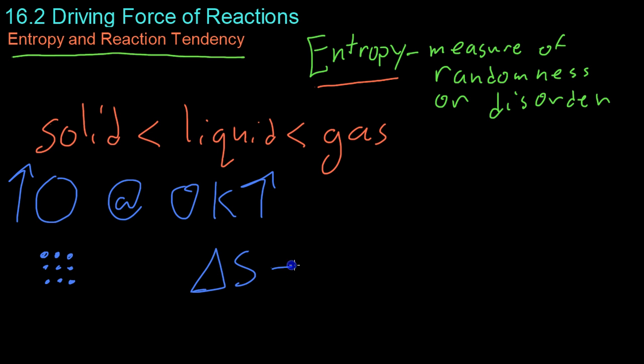And it's called delta S because it's a change in entropy derived usually from a reaction. So, you have the entropy of the product minus the entropy of the reactant. Very similar to how enthalpy is measured as the difference between the enthalpy of the product and the enthalpy of the reactant.